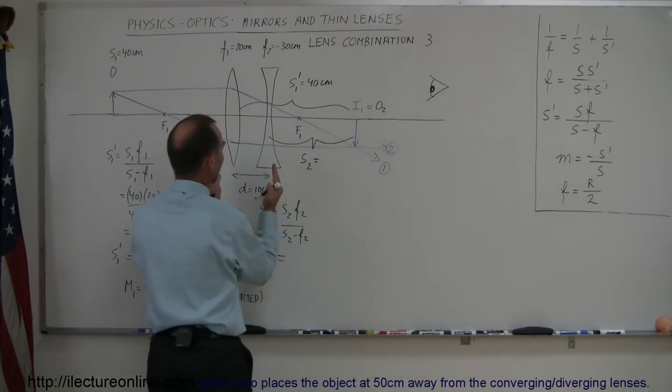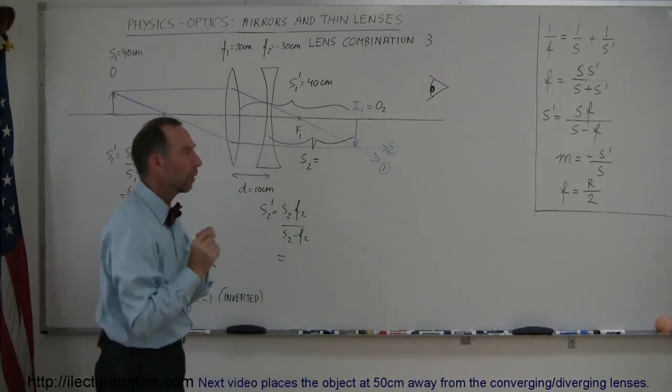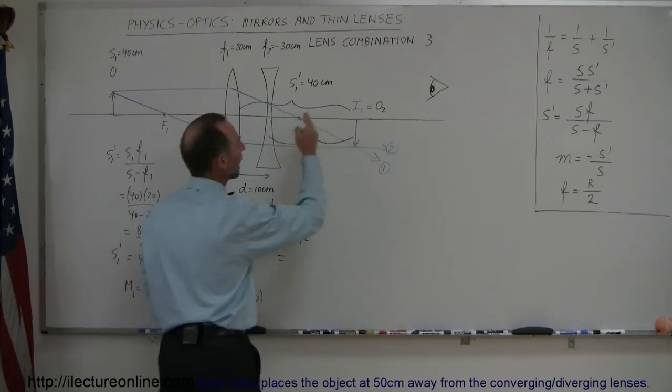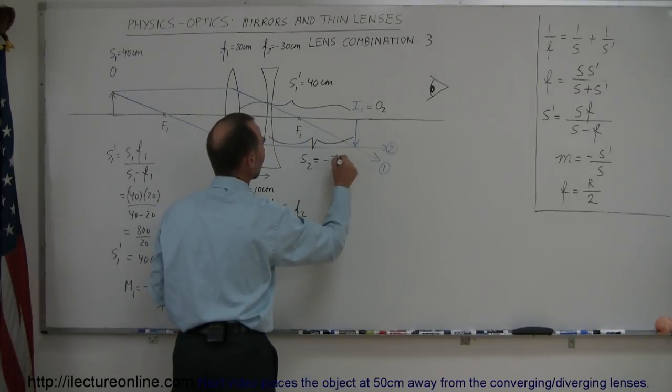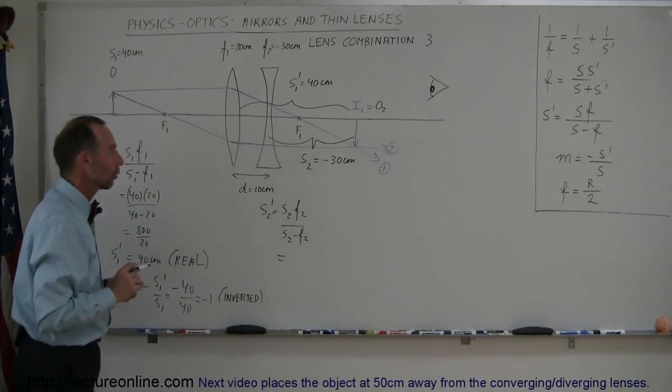Notice that this is 40 centimeters, the distance between the lenses is 10 centimeters, so s2 is 30 centimeters. However, since the object is behind the lens, that becomes a negative object distance of negative 30 centimeters, which is the correct object distance for lens 2.